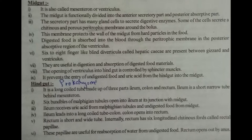The hindgut is also known as the proctodeum. It is a long coiled tube made of three parts: ileum, colon, and rectum. The ileum is a short narrow tube behind the mesentron. Six bundles of Malpighian tubules open into the ileum at its junction with the midgut. The ileum receives uric acid from the Malpighian tubules and undigested food from the midgut. The ileum leads into a long coiled tube, the colon, which opens into the rectum.